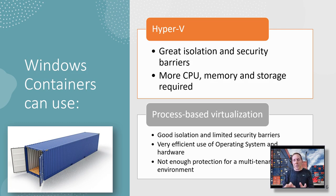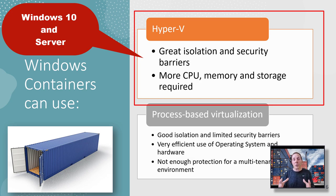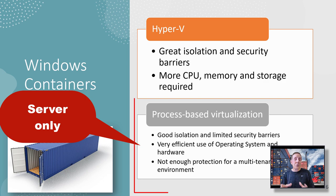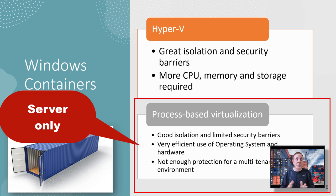Let's talk about Windows containers specifically. There are two basic types. There are Hyper-V isolation containers, which are containers inside a Hyper-V environment. They provide really good isolation and security barriers, but they require more CPU, memory, and storage, and they're larger in file size. There's also a processor-based type of container for Windows, which has good isolation but limited security barriers, and very efficient use of the operating system and hardware. You wouldn't want to use it in a multi-tenant cloud environment, but it has its advantages.